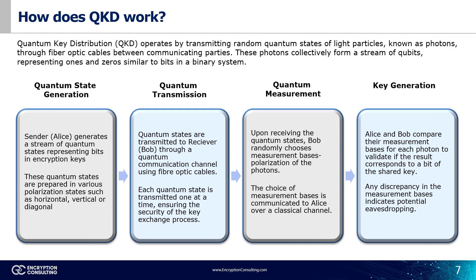Upon receiving the quantum states, Bob randomly chooses measurement bases, such as rectilinear or diagonal, to measure the polarization of the photons. The choice of measurement bases is communicated to Alice over a classical channel. Alice and Bob then compare their measurement bases for each photon. If they use the same basis, the measurement result corresponds to a bit of the shared key. Any discrepancy in the measurement bases indicates potential eavesdropping, prompting the parties to discard those bits and retry. After a sufficient round of quantum transmission and measurement, Alice and Bob obtain a shared secret key known only to them, which can then be used for encryption and decryption of data, ensuring confidentiality and integrity.